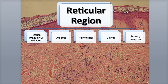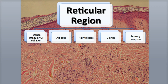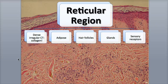The reticular region is the deeper, thicker part of the dermis and is connected to the subcutaneous layer. 'Reticular' means net-like and describes the complex network of collagen fibers, elastic fibers, fibroblasts, macrophages, and adipose cells found throughout this region. The collagen fibers are bundled together to provide strong protein reinforcement that helps the skin resist stretching. The elastic fibers give the skin extensibility — meaning it can stretch — and elasticity, meaning it can return back to its original shape after stretching.